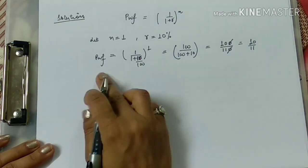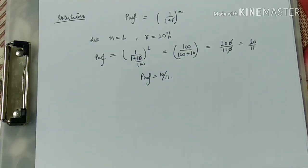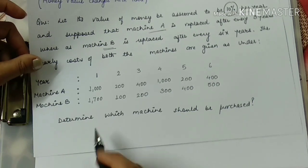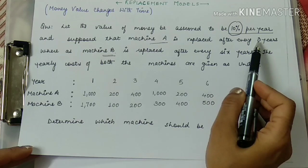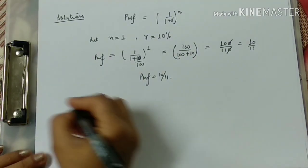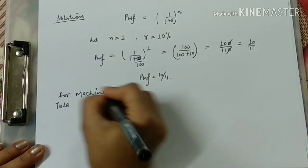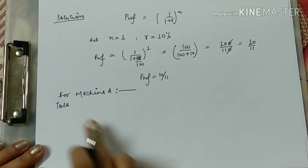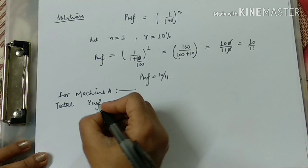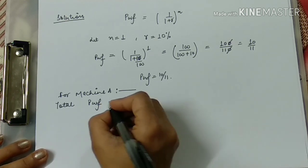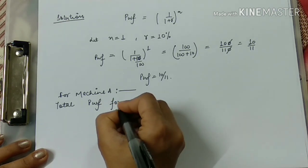So the present worth factor (PWF) is 10 upon 11. Now we have to determine which machine should be purchased — machine A or machine B. Machine A is replaced after every 3 years. We will calculate the total present worth factor for machine A for 3 years.